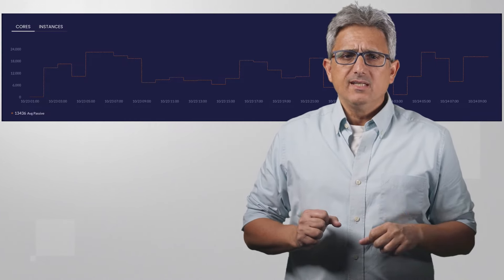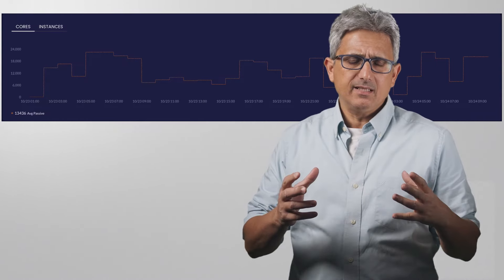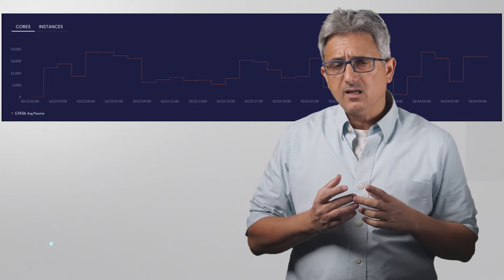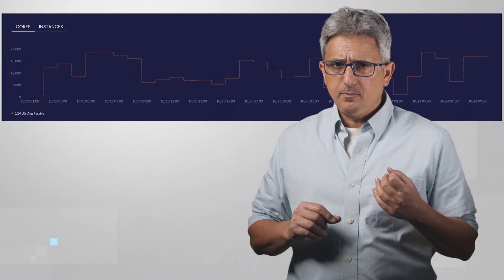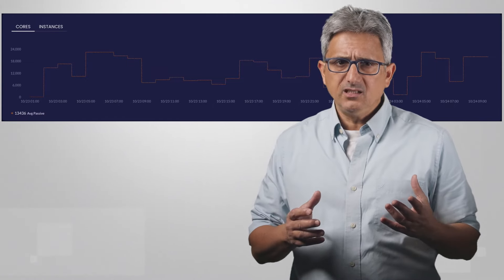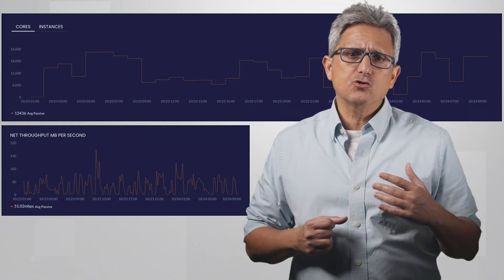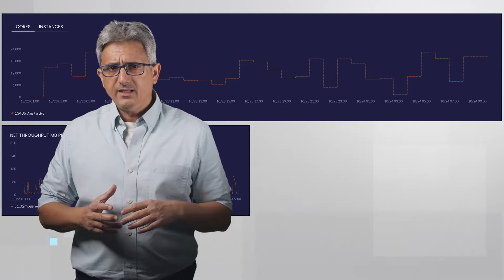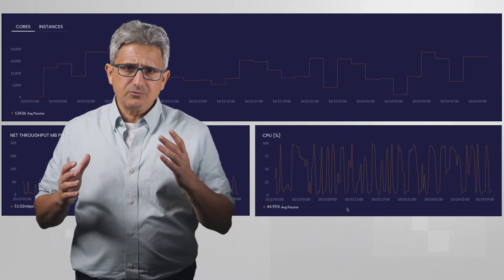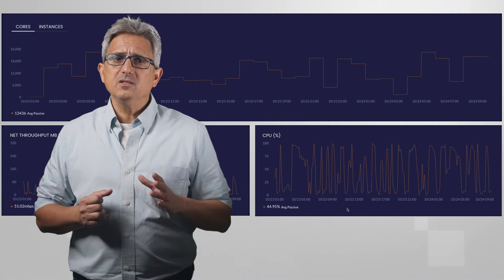An interesting point to know is how fast we can get an additional CPU and how fast a non-used CPU is released, and how much do we pay extra for this inefficiency. You can see that on average each core is processing 51 megabits per second and each core has about 45% of CPU utilization.